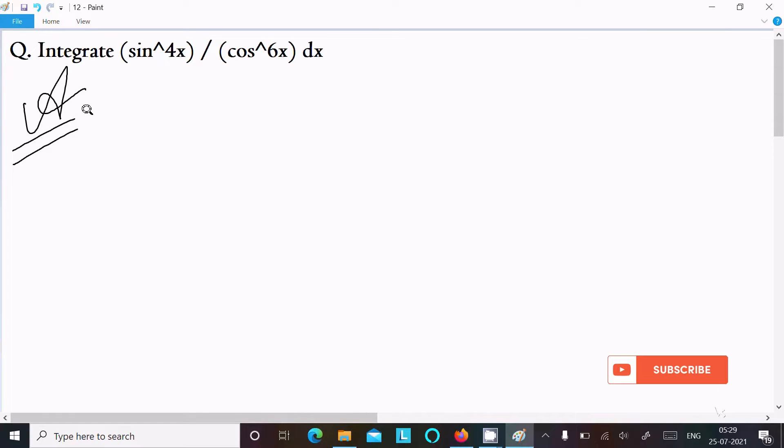So writing here integration symbol sin⁴x divided by cos⁶x dx. Or we can write this one as sin⁴x and here this is cos⁴x, here cos²x dx.